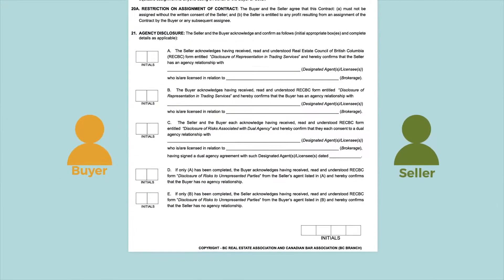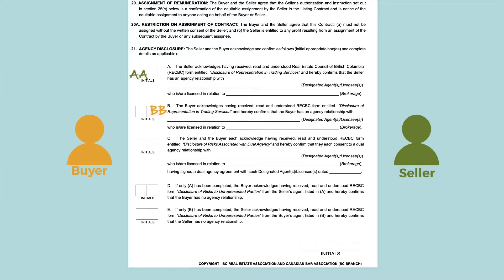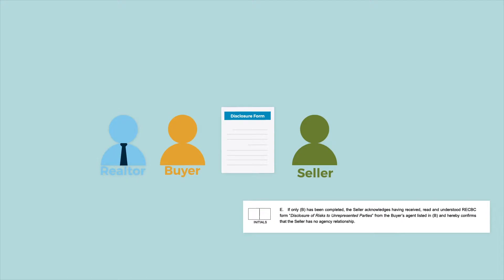The buyer and seller initial the appropriate boxes to acknowledge receipt of the appropriate agency disclosure forms. Sometimes one of the parties is represented and the other is not. In that case, the realtor who represents a client is required to provide the unrepresented party the appropriate disclosure form to explain the risks of not being represented. The unrepresented party initials the appropriate box to acknowledge there is no agency relationship and that appropriate disclosure has been made. If neither party is represented by a realtor, this section would typically not be completed.